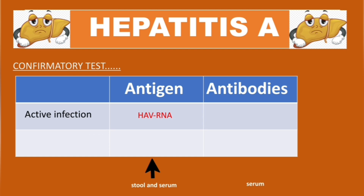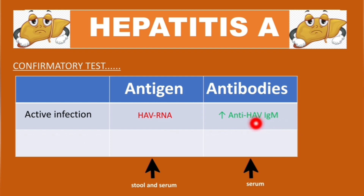Serologically, a high level of anti-HAV IgM antibodies can be detected. These antibodies rise between the first and third week, reaching their peak at week three. Importantly, from three months up to six months after resolution of symptoms, anti-HAV IgM can still be detected.